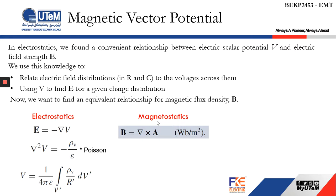The relationship given through some derivation is B equals to del cross A. A here is the magnetic vector potential.